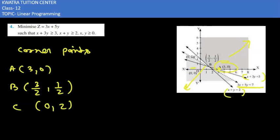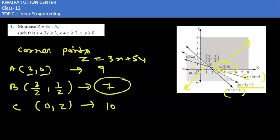Now we can obtain our coordinate points and simplify our equation 3x plus 5y. When we put our x and y values for each point, for A our value will be 9, for B our value will be 7, and for C our value will be 10. Here we can see the value 7 is the smallest one, this is the minimized value of z.